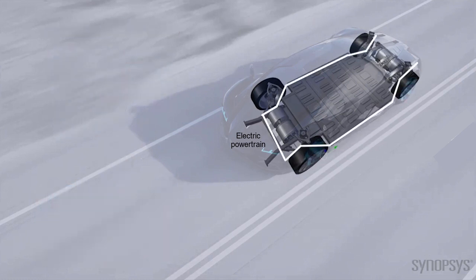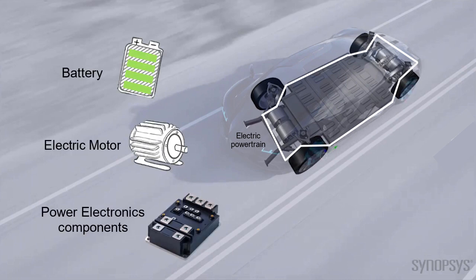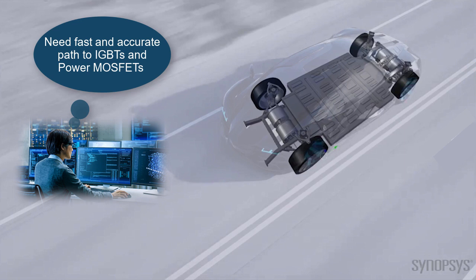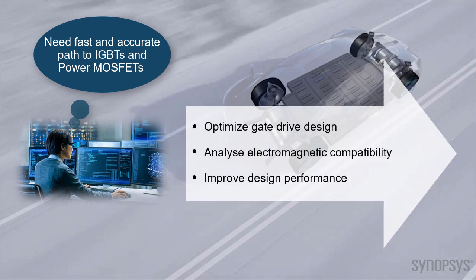Consider the electric powertrain design that includes battery, motor and power electronics components. Designers need fast and accurate path to power electronics components such as IGBTs and power MOSFETs to optimize gate drive designs, analyze electromagnetic compatibility and improve design performance using simulation.